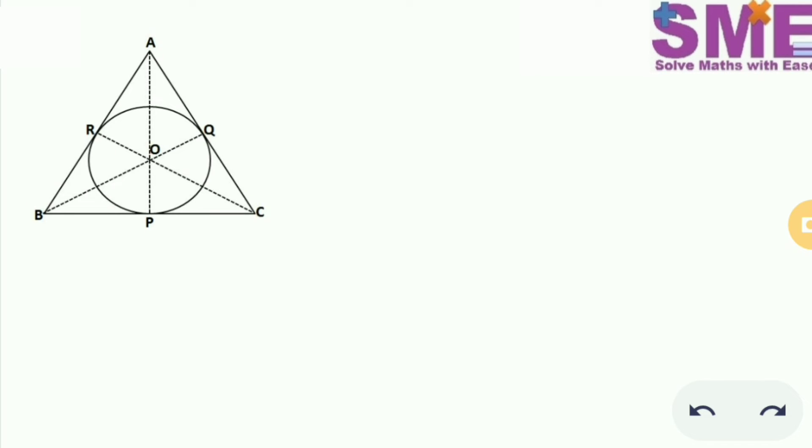Here we have the modified figure. As this is an equilateral triangle, as per symmetry all these three lines BQ, CR and AP will pass through the center of the circle O.